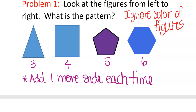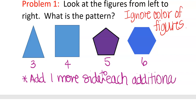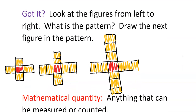The pattern is: add one more side for each additional figure. You can pause the video now to look at the Got It question and see if you can come up with the answer. For Got It number one, look at the figures from left to right, describe the pattern in words, and draw the next figure in the pattern.